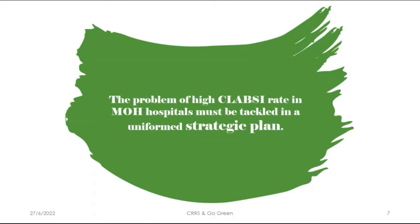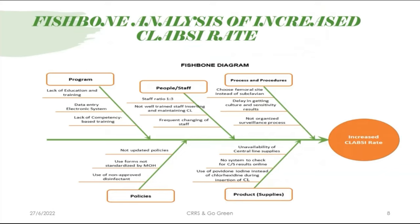The problem of high CLABSI rate in MH hospitals must be tackled, and the GDIPC felt the need to conduct a unified strategic plan. Extensive literature review with fishbone analysis of CLABSI causes was done. We found defects in the program itself, like lack of education and training, data entry issues in the electronic system, and lack of competency-based training. There are also deficiencies in staff-to-patient ratio — in some hospitals it was as high as 1 to 3 or more — with no well-trained staff for inserting and maintaining central lines, and frequent staff changes.